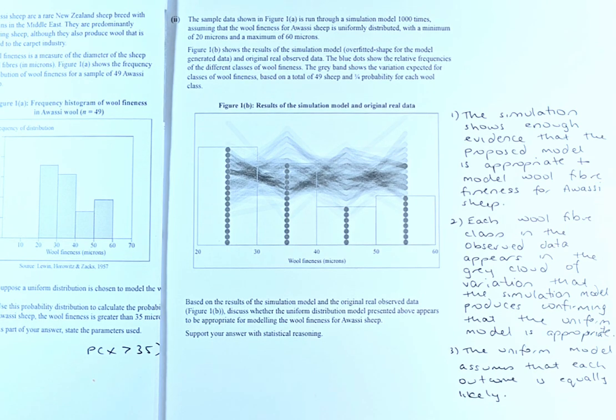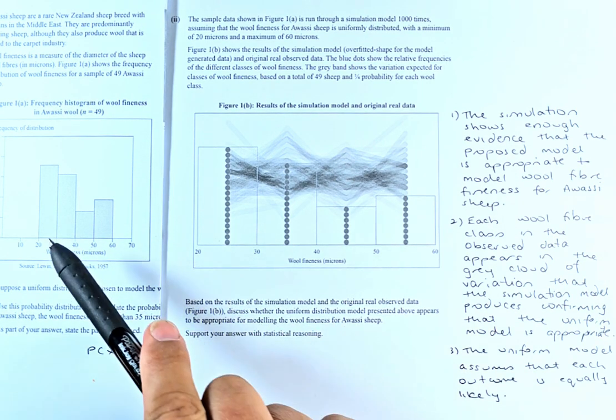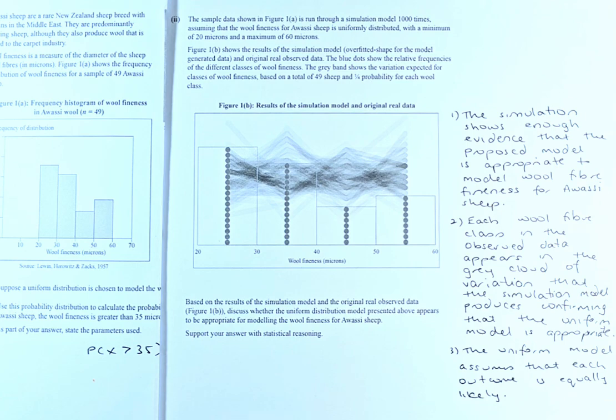So it is appropriate because you can see it's quite similar shape. Each wool fiber in the observed data appears in the grey cloud of variation that the simulation model produced, confirming the uniform model is appropriate.